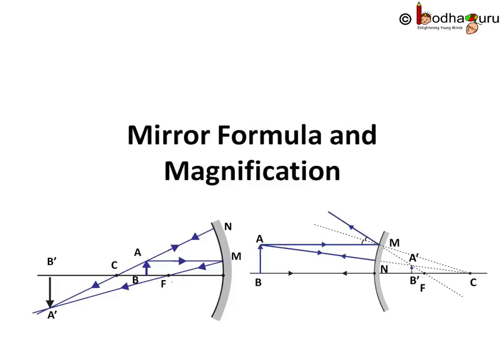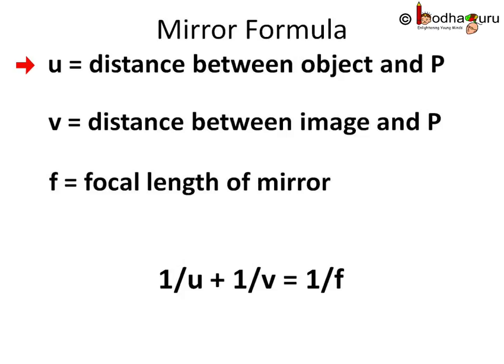Let u equal the distance between object and pole of the mirror, this is called object distance. Let v be the distance between image formed and pole of mirror, this is the image distance.